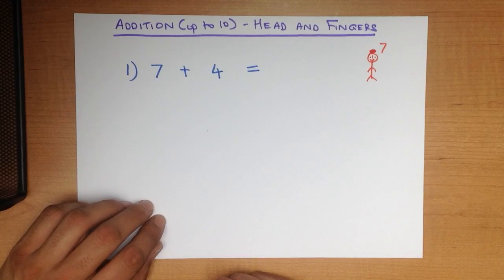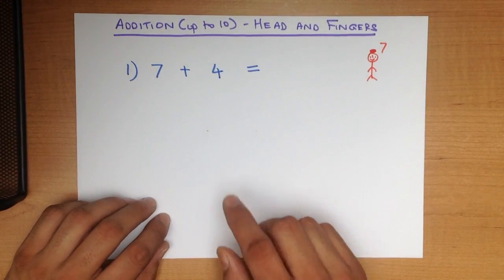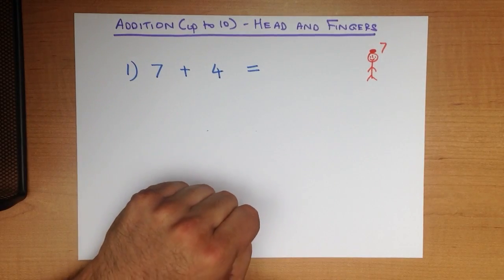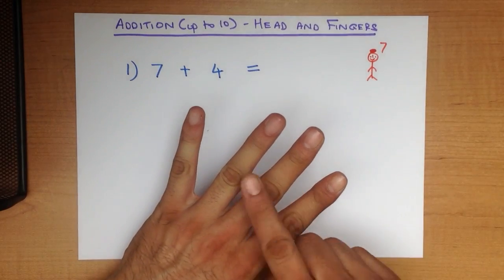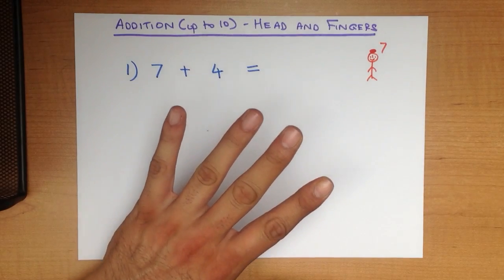The second number, we hold out the number of fingers there are for the second number. In this case, there are 4. 1, 2, 3, 4. So there is 7 on my head and 4 on my hand.